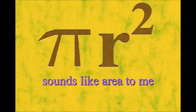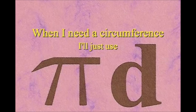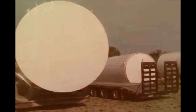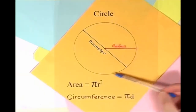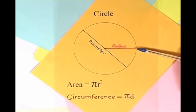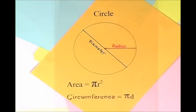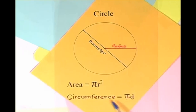Pi r squared sounds like area to me, when I need a circumference, I'll just use pi d. Here is a circle, it knows how to get around. It has a radius from center to rim. And its diameter's a line that goes from side to side while passing through the center, now isn't that simple. Pi r squared sounds like area to me, I'll just use pi d.